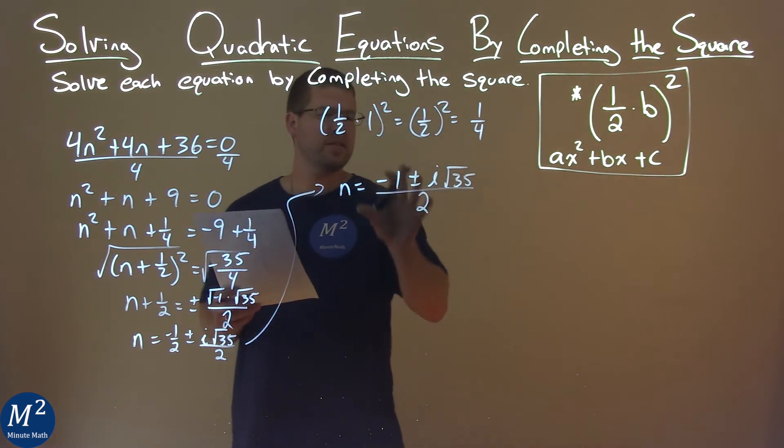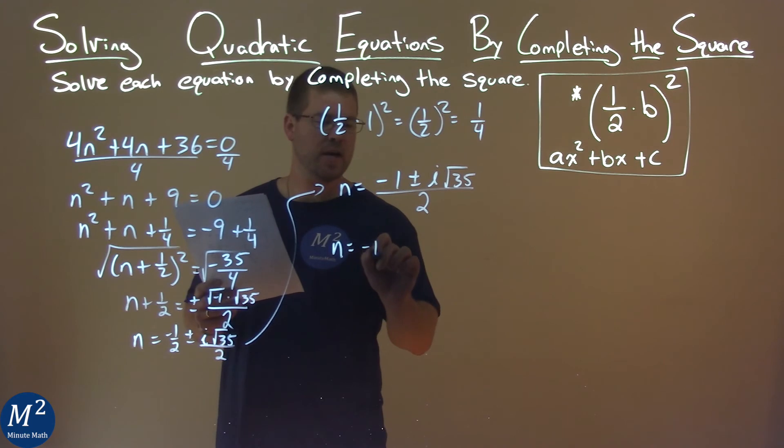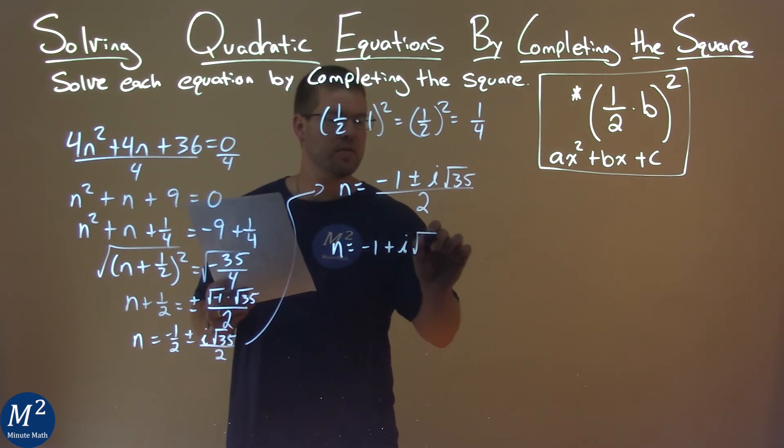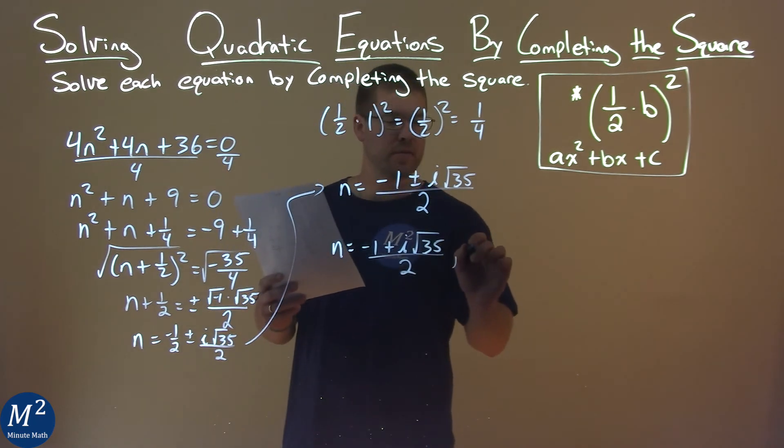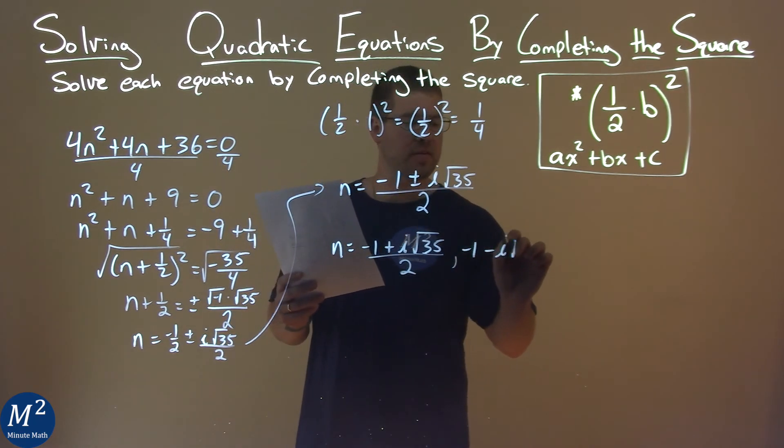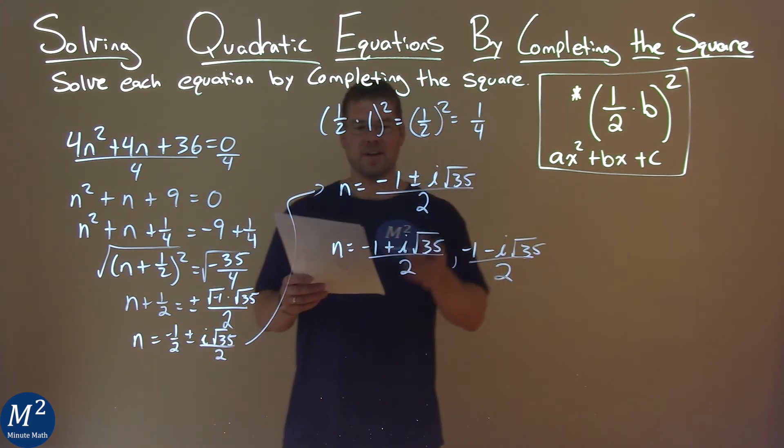Now this is a single statement showing two numbers. If we wanted to show it separately, we'd do the plus and then the minus. So we have negative 1 plus i square root of 35 over 2, and I'll show the minus now: negative 1 minus i square root of 35 over 2. And these two are our final answers.